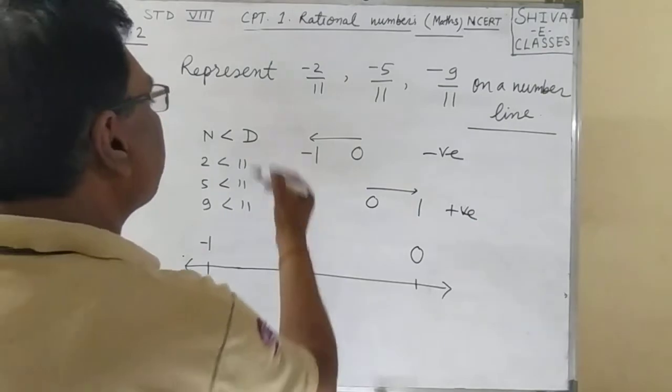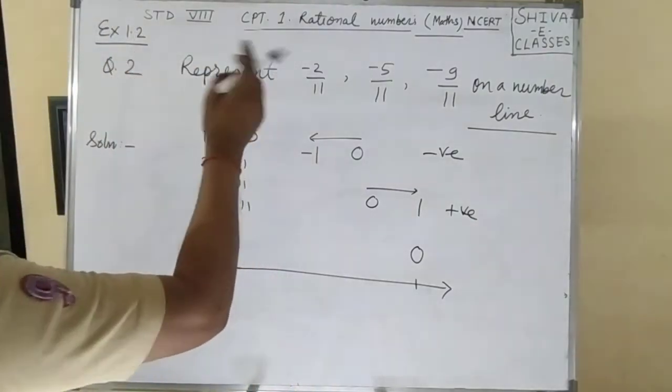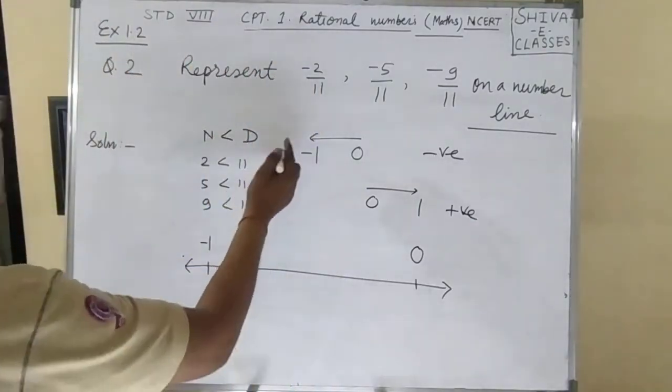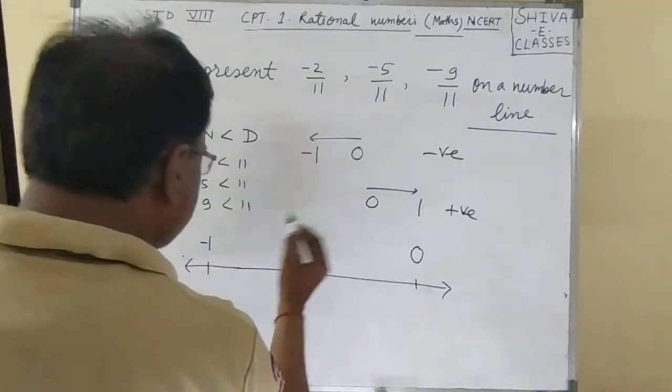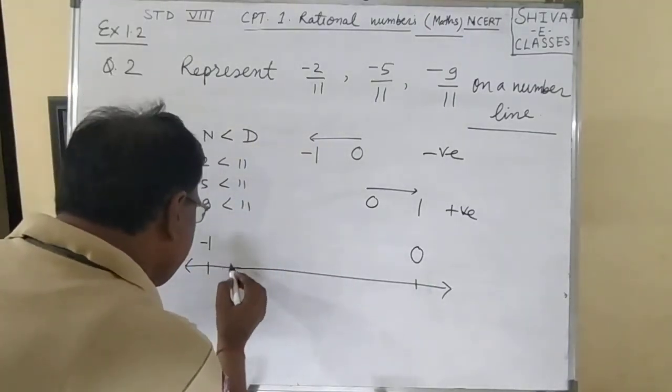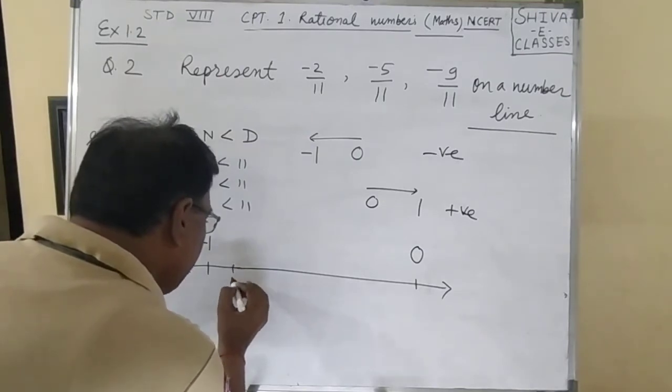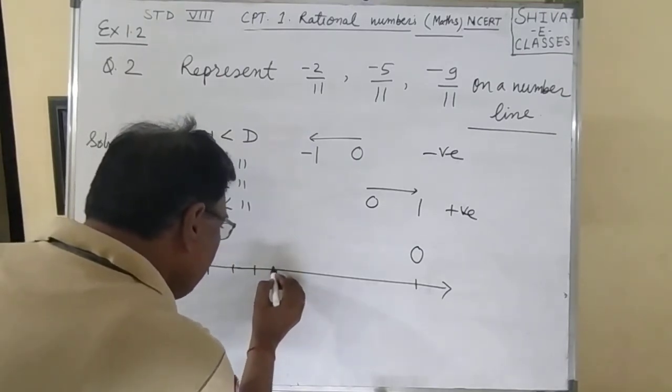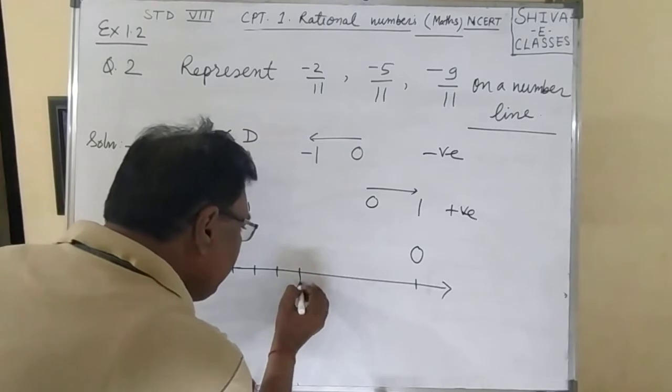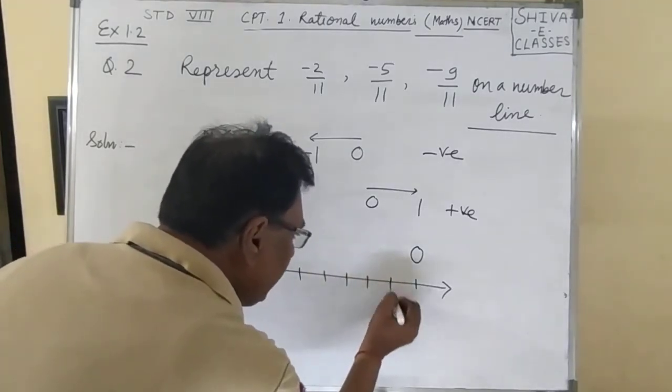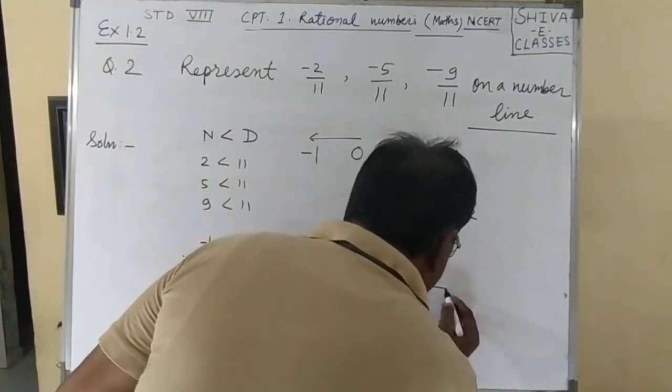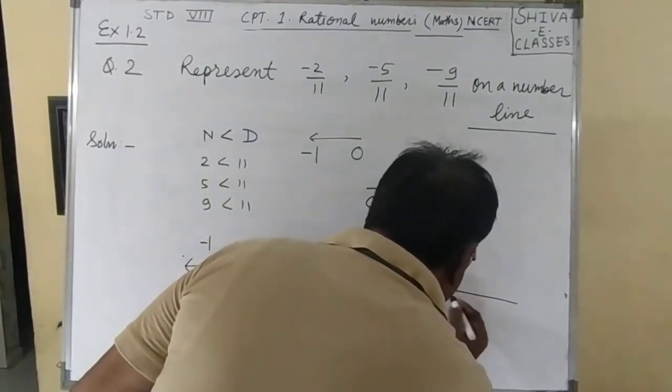So we divide it into 1, 2, 3, 4, 5, 6, 7, 8, 9, 10 equal parts.